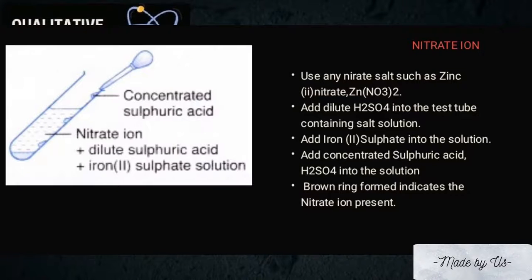For chloride ion, use any chloride salt such as zinc chloride solution. Then, add nitric acid into the salt solution, followed by five drops of silver nitrate into the salt solution. A white precipitate forming indicates the presence of chloride ion.